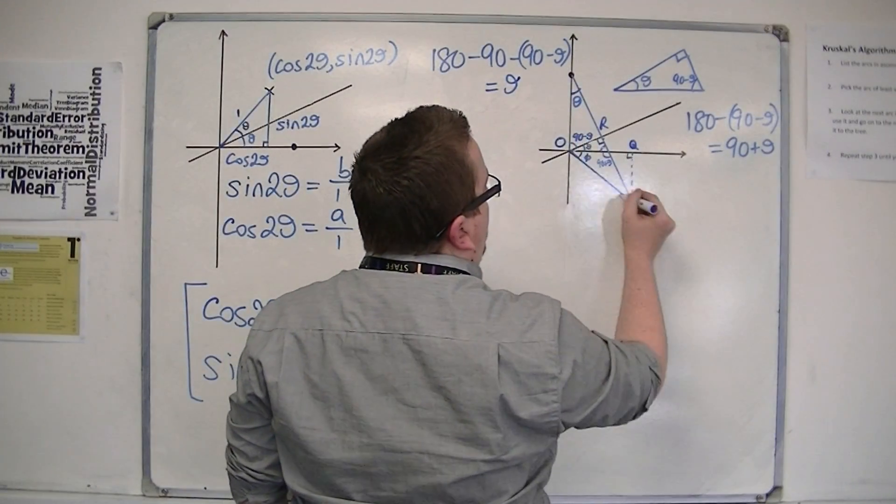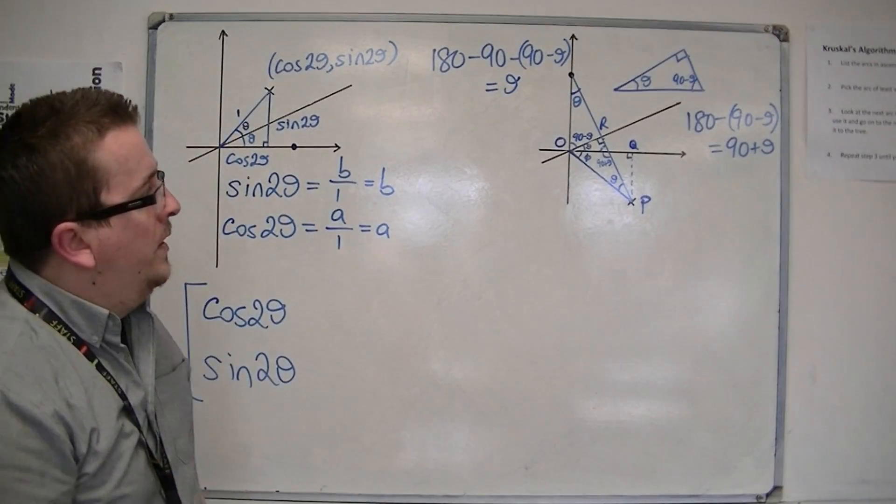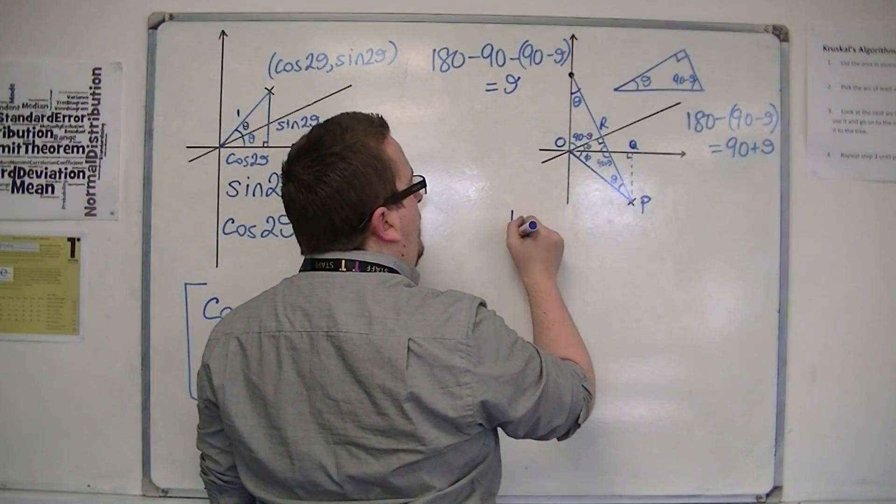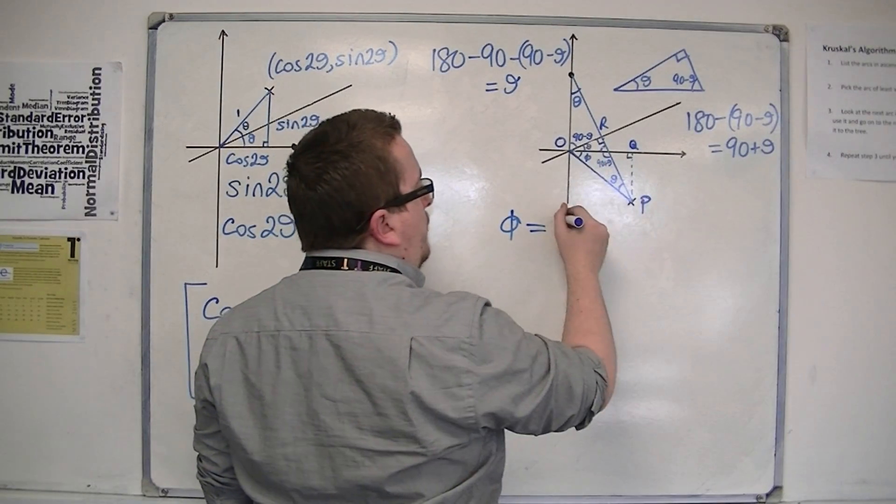So that means, because this is isosceles, that would also be theta. So that now says that phi, well, these three angles must add up to 180.